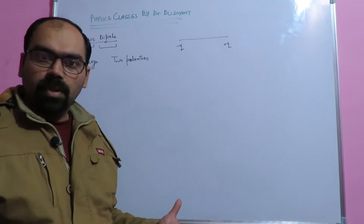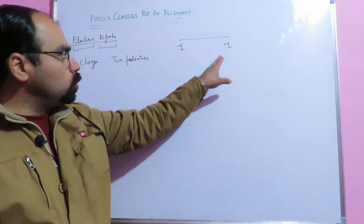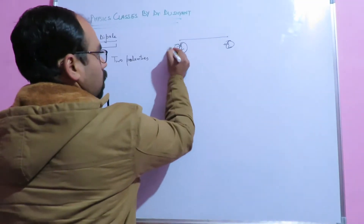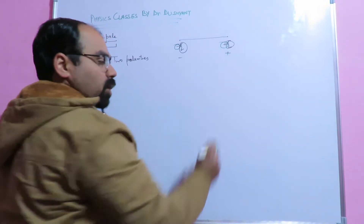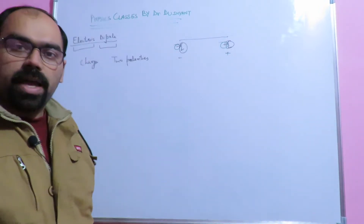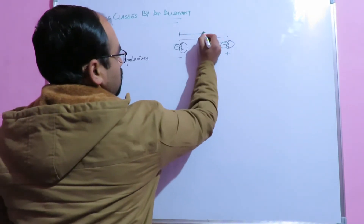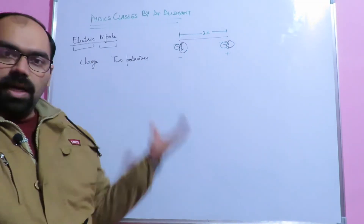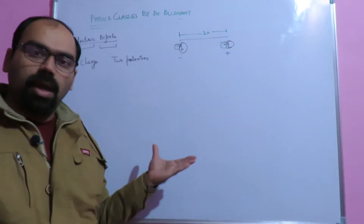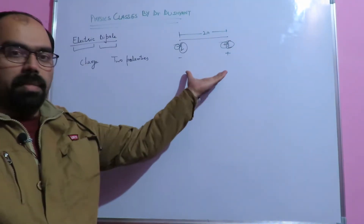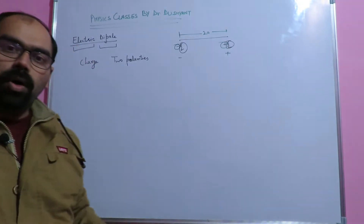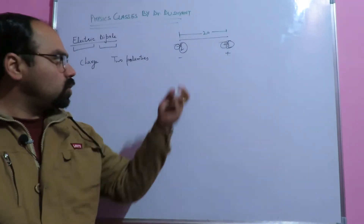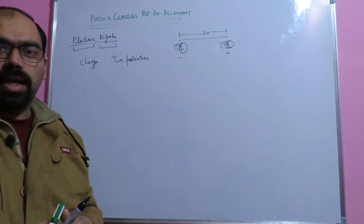So there are two point charges, where the magnitude of both charges is the same, but their polarities are opposite — one is minus and one is plus. This pair of two charges with opposite polarities but the same magnitude is called an electric dipole.